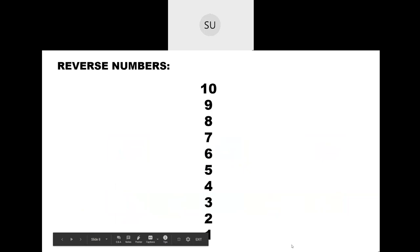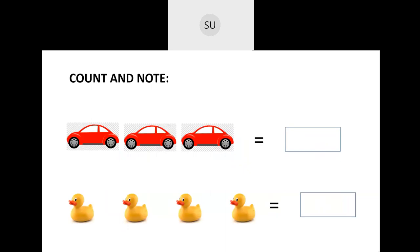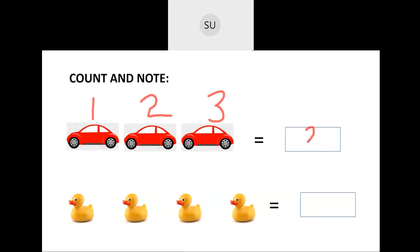Now let's see how to count using numbers. Here they have shown you a picture of cars. Let's count: this is 1, this is 2 and this is 3. So we have 3 cars.